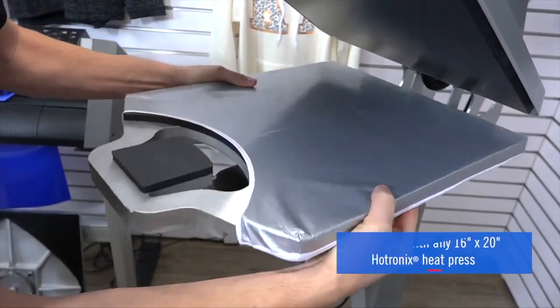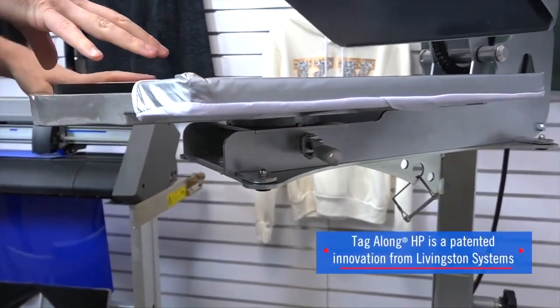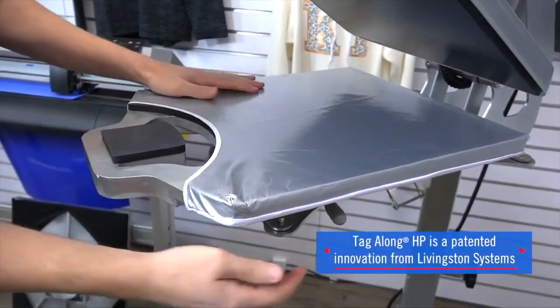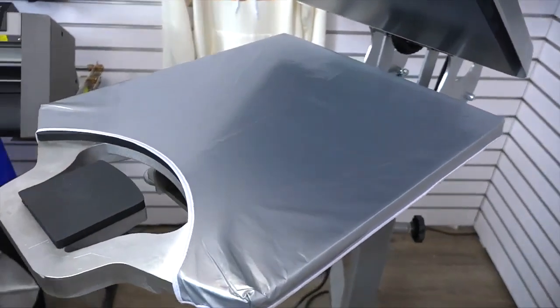You unseat the 16x20 platen, drop in the Tagalong HP, making sure the tag printing area is towards the operator. Lock the lever into place and it's seated firmly into the press.